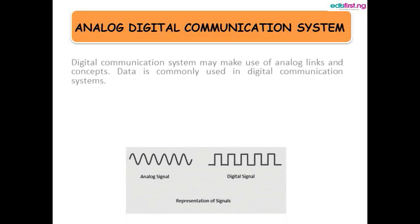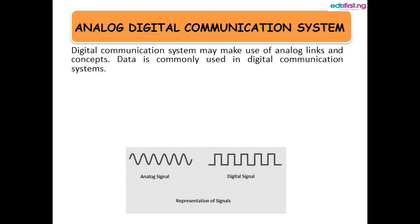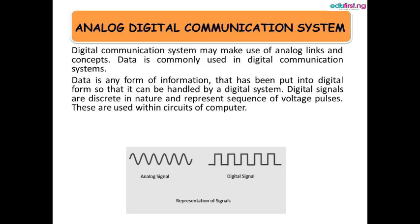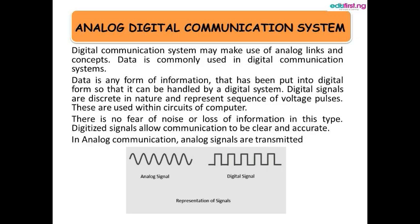There may be noise in analog communication which may lead to loss of information. Digital communication systems, on the other hand, may make use of analog links and concepts. Data, which is any form of information put into digital form, is commonly used. Digital signals are discrete in nature and represent a sequence of voltage pulses. These are used within circuits of computers, and there is no fear of noise or loss of information.